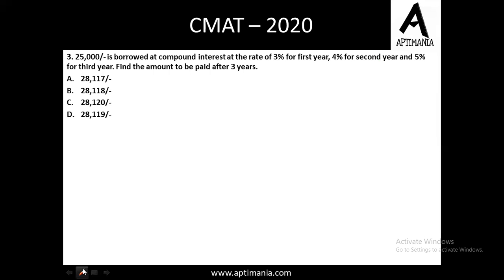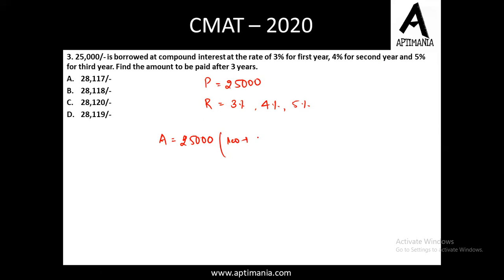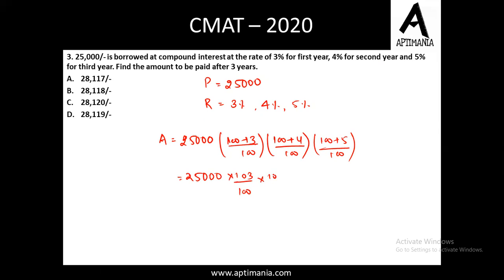Question number 3 is again a question from interest. 25,000 is borrowed — the principal given to us is 25,000 — at different rates: 3% for the first year, 4% for the second year, and 5% for the third year. We have to calculate the amount. The amount can be calculated as: principal × (103/100) × (104/100) × (105/100), since each rate applies for 1 year. So on solving we'll have 25,000 × (103/100) × (104/100) × (105/100).